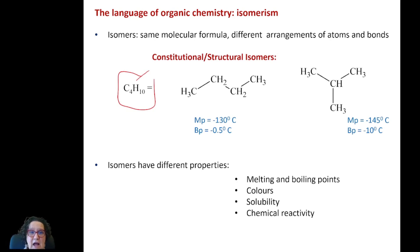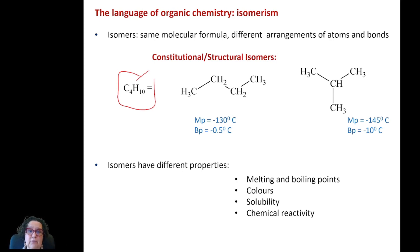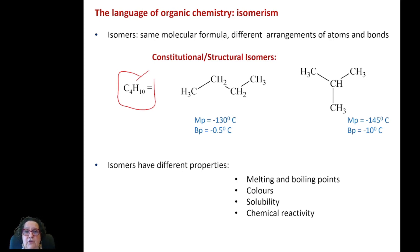It doesn't tell me how those carbons and those hydrogens are arranged, and on the right I've got a couple of examples of ways you could arrange those carbons and hydrogens. Those two compounds both have 4 carbons and 10 hydrogens, but they are clearly different structures.